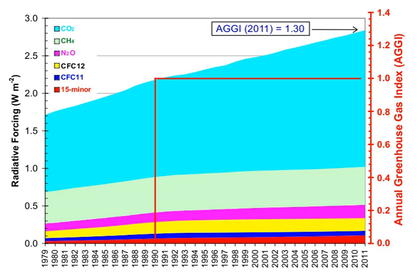Should greenhouse gas emissions continue at their rate in 2017, global warming could cause Earth's surface temperature to exceed historical values as early as 2047, with potentially harmful effects on ecosystems, biodiversity, and human livelihoods.